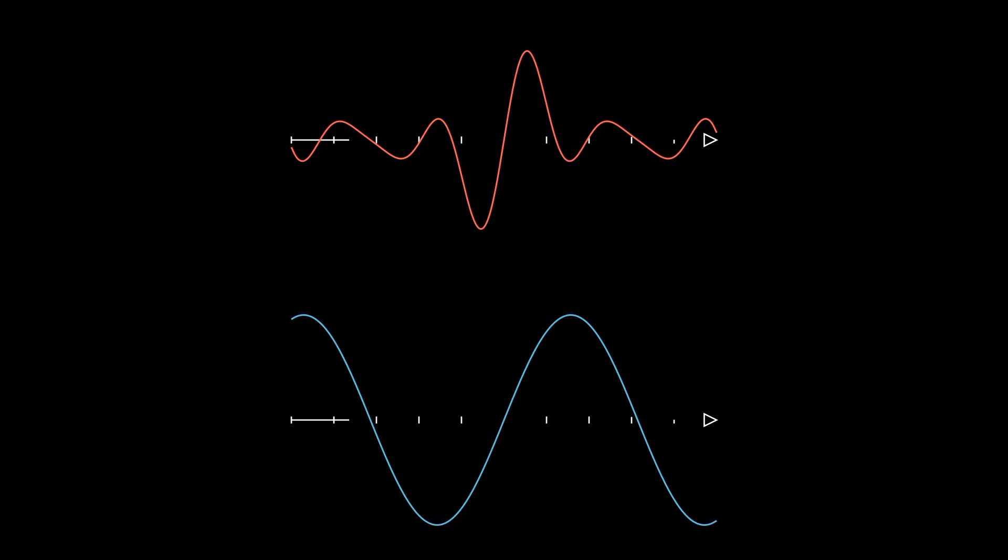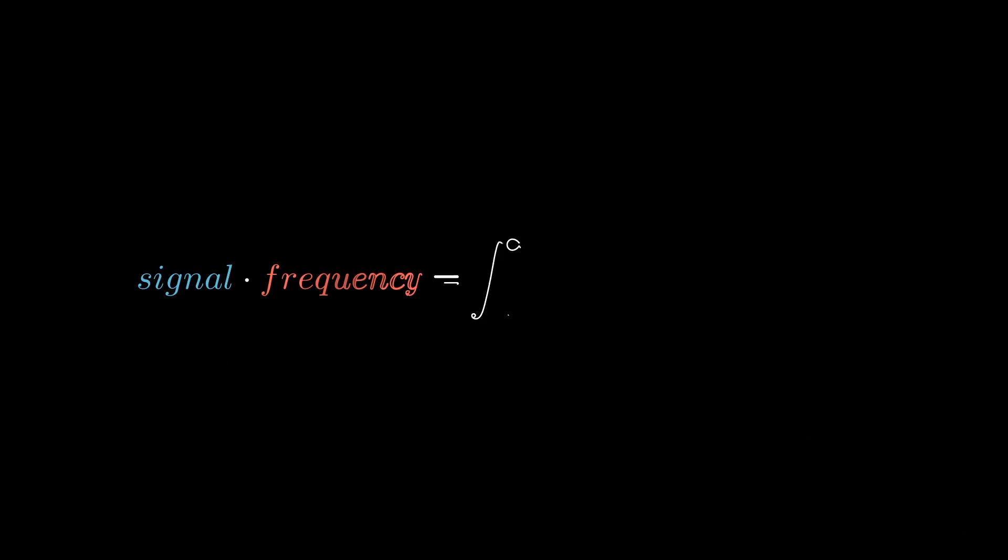This is no easy task, but now, armed with the ability to apply linear algebra knowledge to functions, you can find the similarity of our desired frequency to our signal by taking the dot product. This is called the Fourier sine transform.